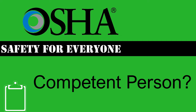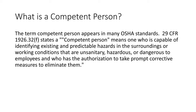What is an OSHA competent person? The term competent person appears in many OSHA standards. 29 CFR 1926.32F states a competent person means one who is capable of identifying existing and predictable hazards in the surroundings or working conditions that are unsanitary, hazardous, or dangerous to employees, and who has the authorization to take prompt corrective measures to eliminate them.